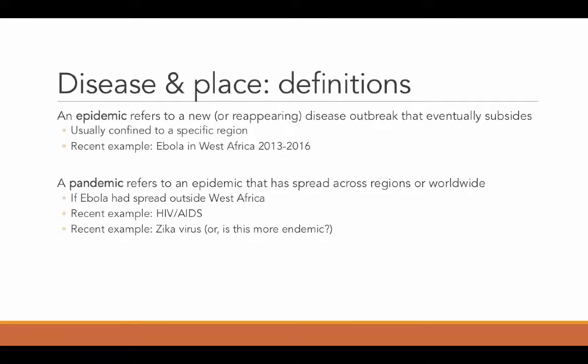A more recent example is the Zika virus, which was declared a pandemic in January 2016 by the head of the National Institutes of Health. The Zika virus is contracted through mosquitoes, mainly in South America and in the Caribbean, and people were taking Zika home with them when they traveled. The issue with Zika is that it's linked to a condition called microcephaly, which is when children are born with unusually small heads due to abnormal brain development — very problematic and often fatal for children.